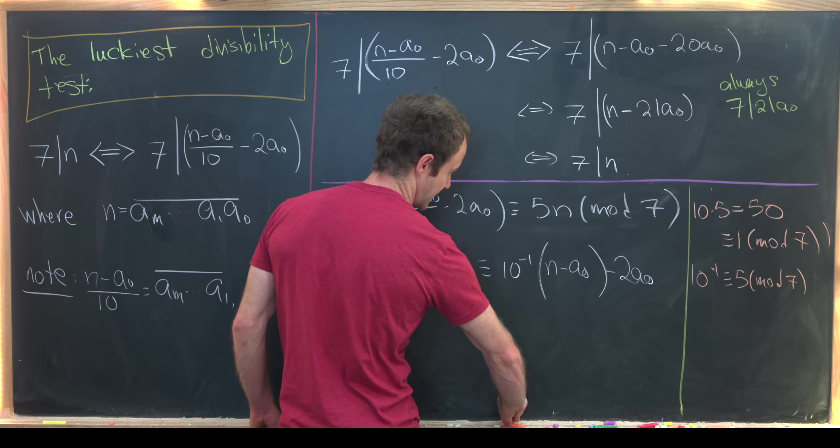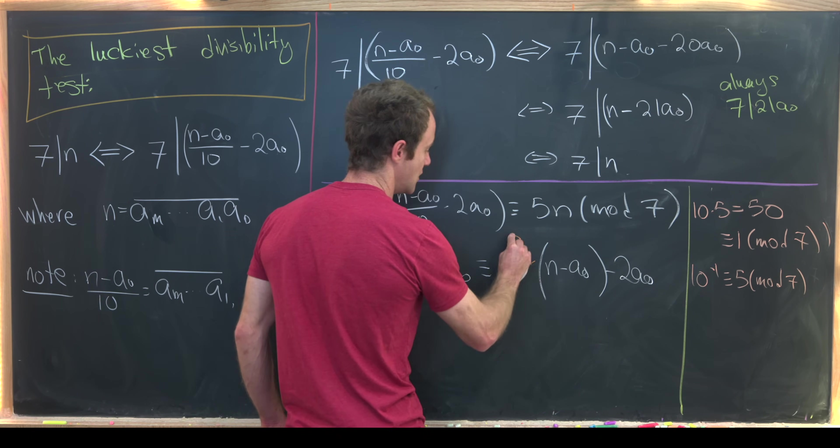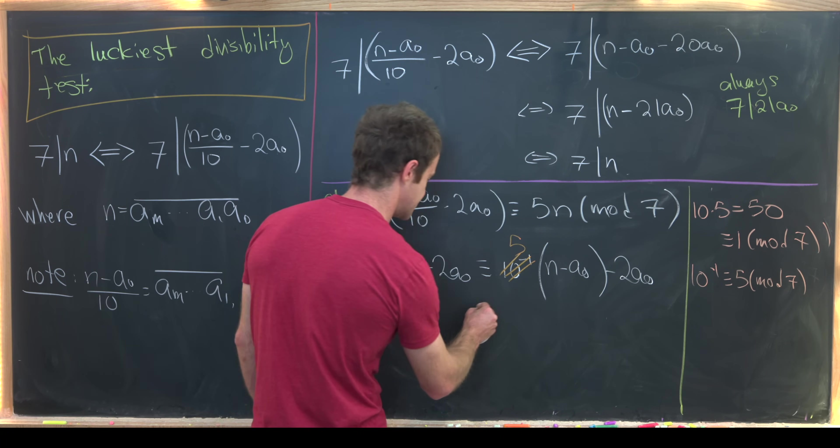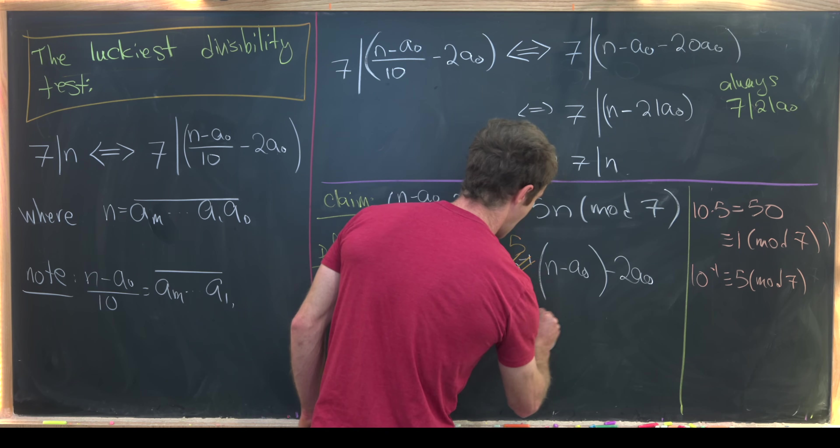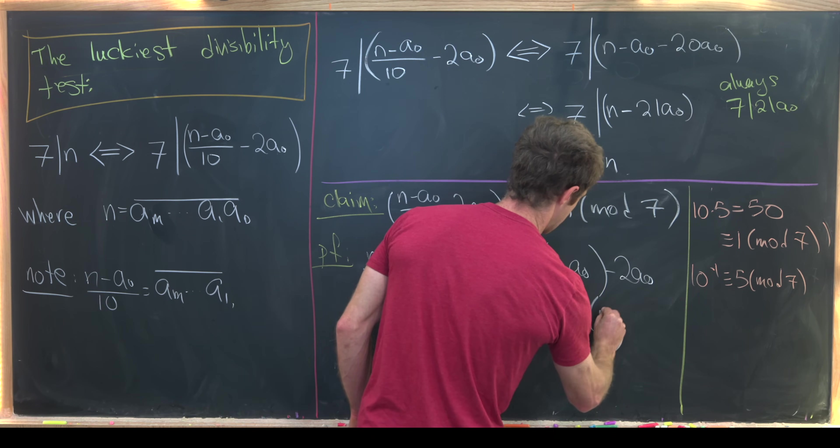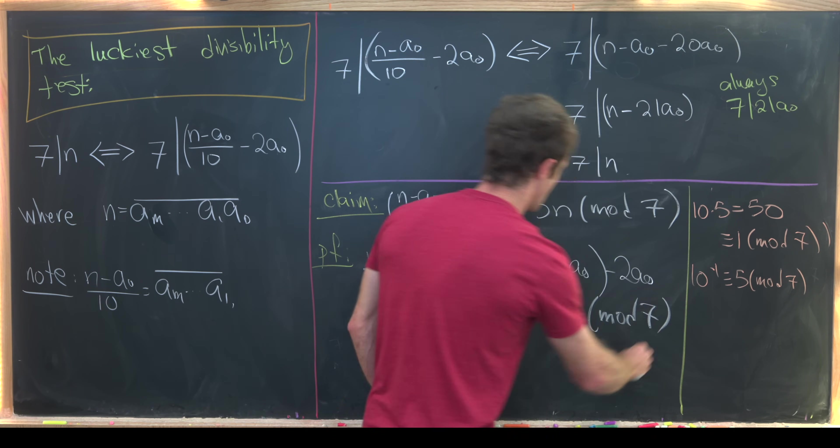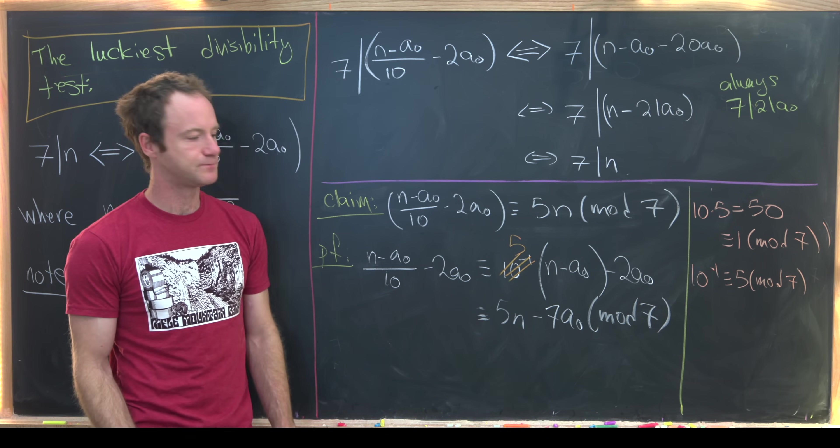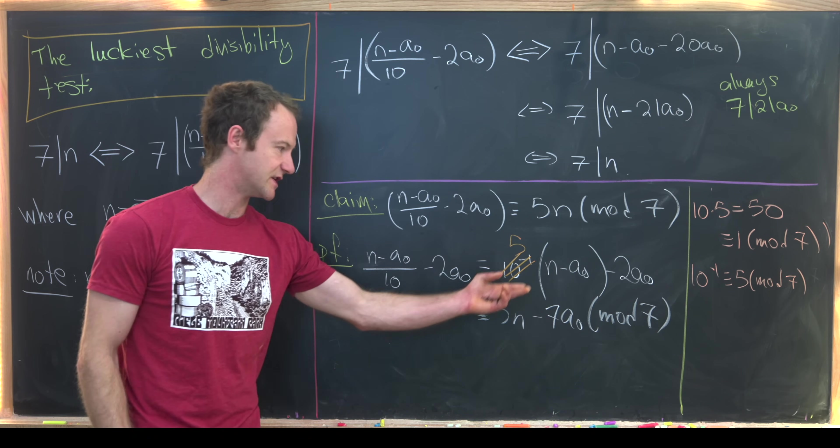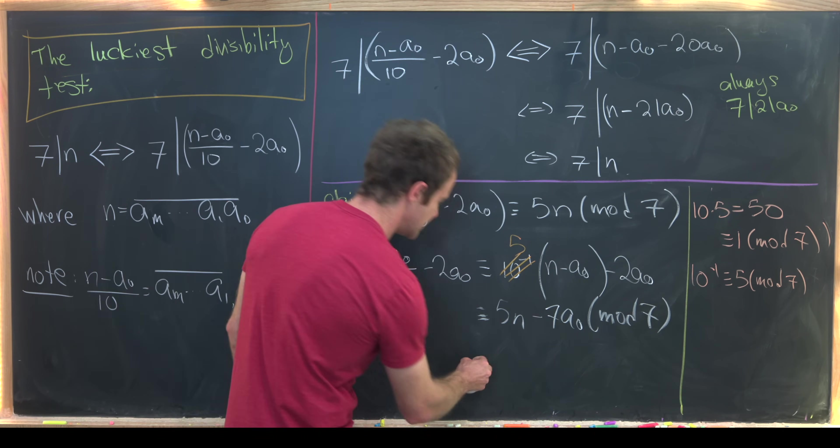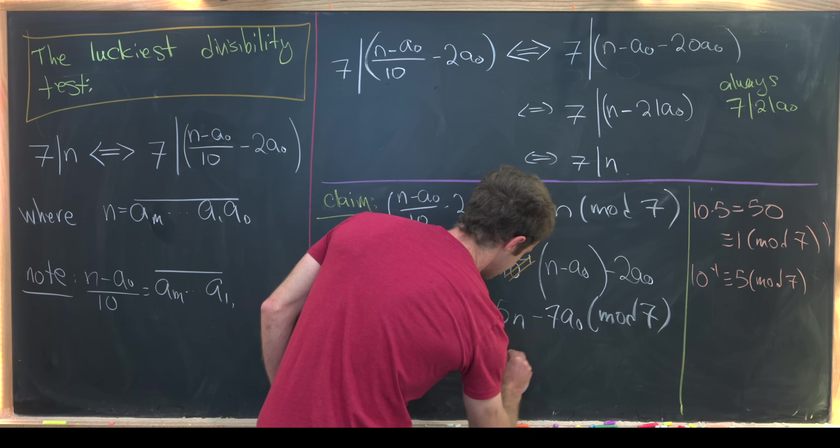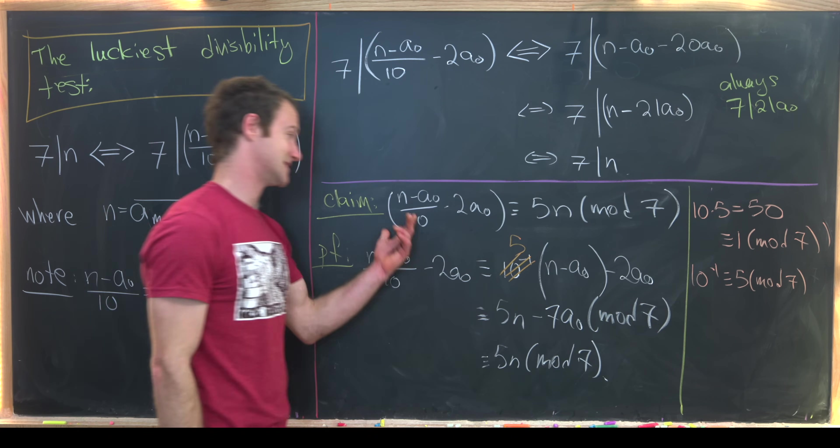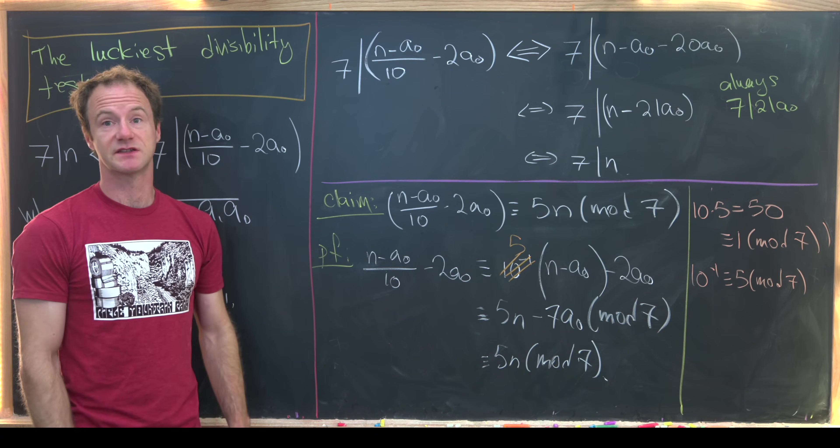So that means we can replace this 10 inverse here with 5. And now we're essentially done. So notice this is congruent to 5n minus 7a naught mod 7, where I got the 7 by negative 5a naught minus 2a naught. Okay, cool. But now 7 is congruent to 0 mod 7. So this all simplifies down to just 5n mod 7, which is exactly what we wanted to show. And that's a good place to stop.